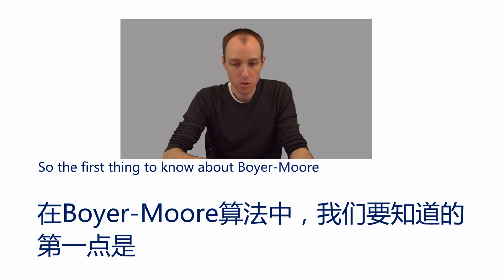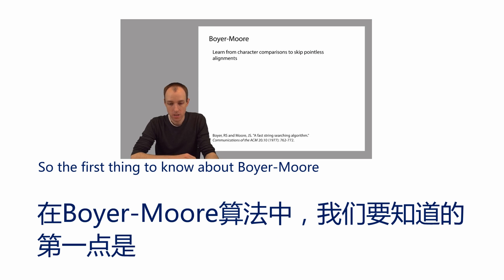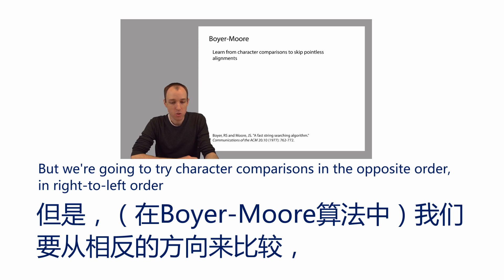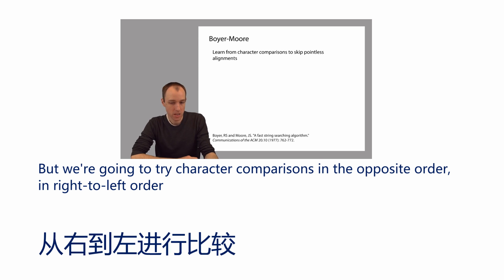The first thing to know about Boyer-Moore is that we're going to try alignments in left-to-right order as we did with naive exact matching, but we're going to try character comparisons in the opposite order — in right-to-left order.